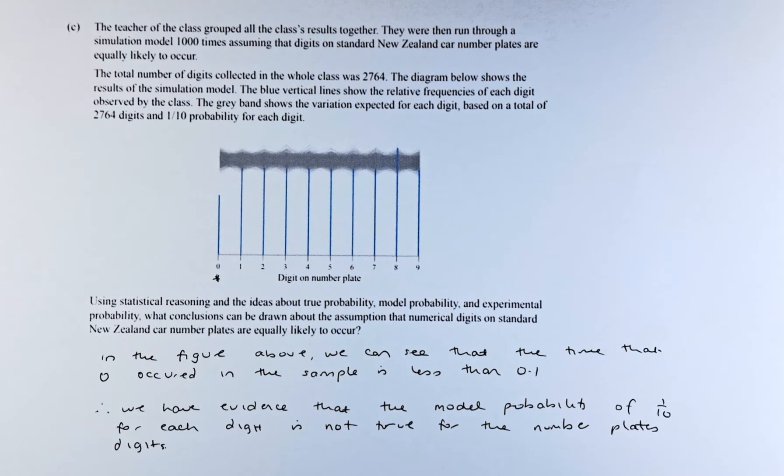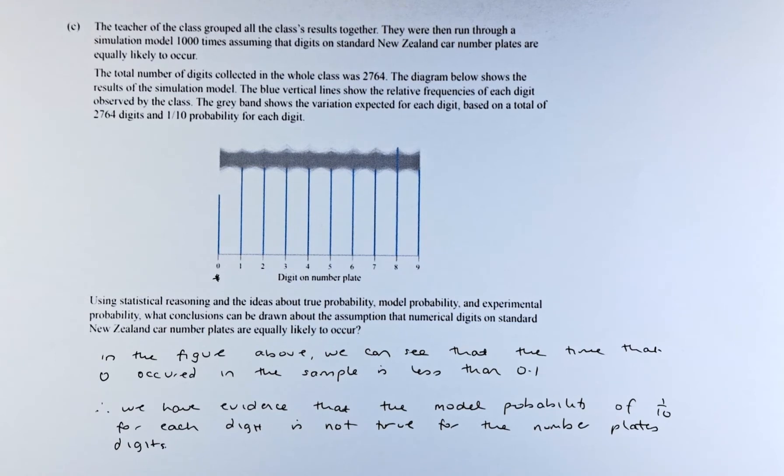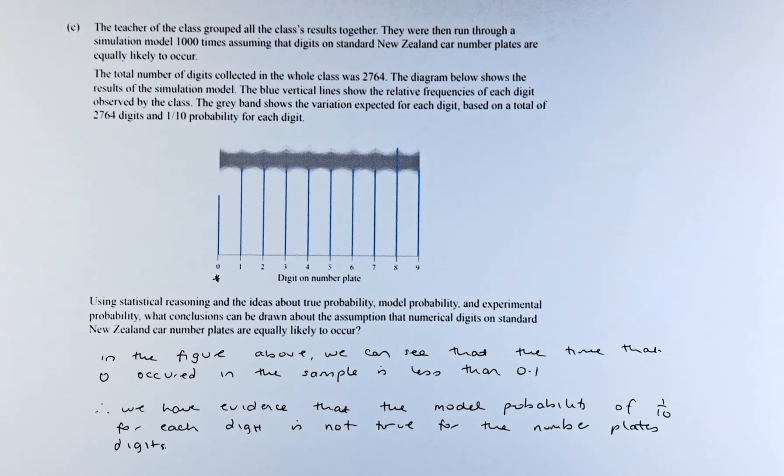Using statistical reasoning and the idea about true probability, model probability, and experimental probability, what conclusion can be drawn about the assumption that the numerical digits of standard New Zealand car plates are equally likely to occur?